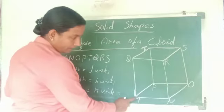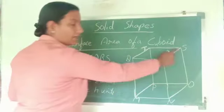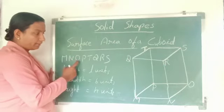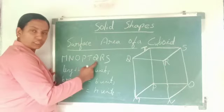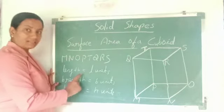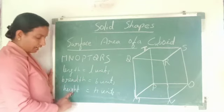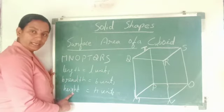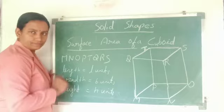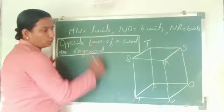Consider a cuboid MNOP-TQRS whose length is L units, breadth is B units, and height is H units.